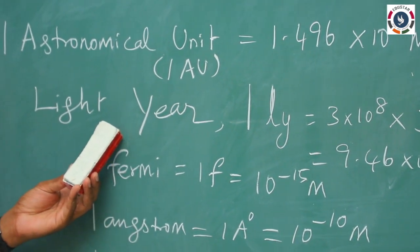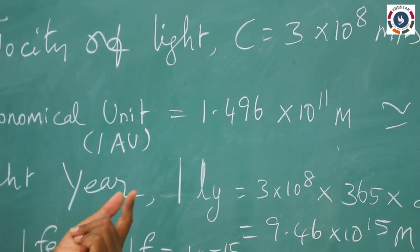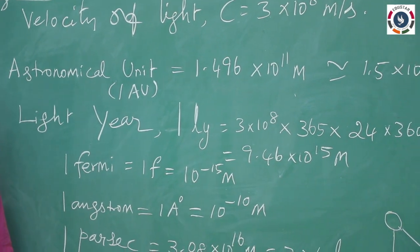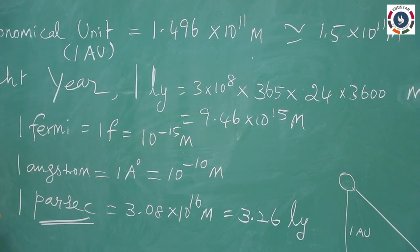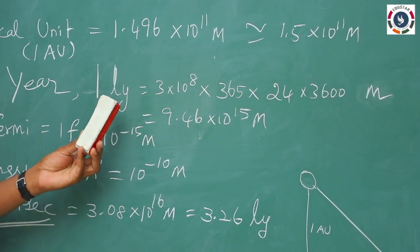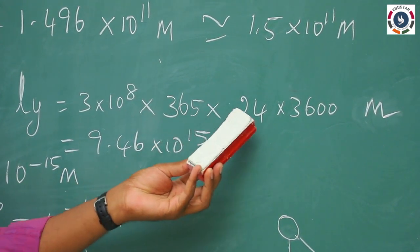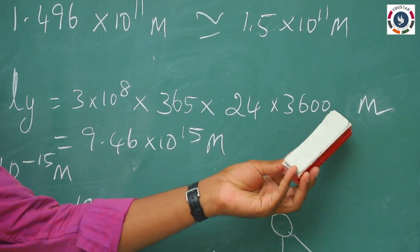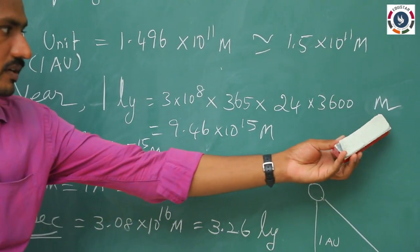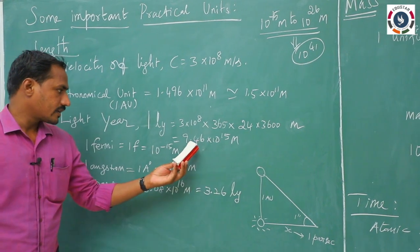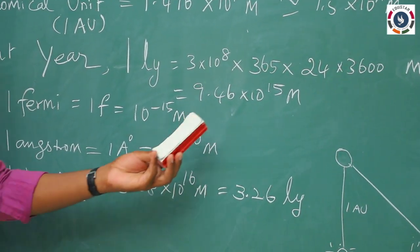Next, light year. What do we mean by light year? A light year is the distance covered by light per year. We know the velocity of light per second is 3×10⁸ meter. Just calculate for a minute, for an hour, for a day, and for 365 days which gives 1 year. The light travelled in 1 year is calculated as velocity of light multiplied by 365 days, each day with 24 hours and each hour with 3600 seconds. Multiplying these values, we obtain 9.46×10¹⁵ meter.